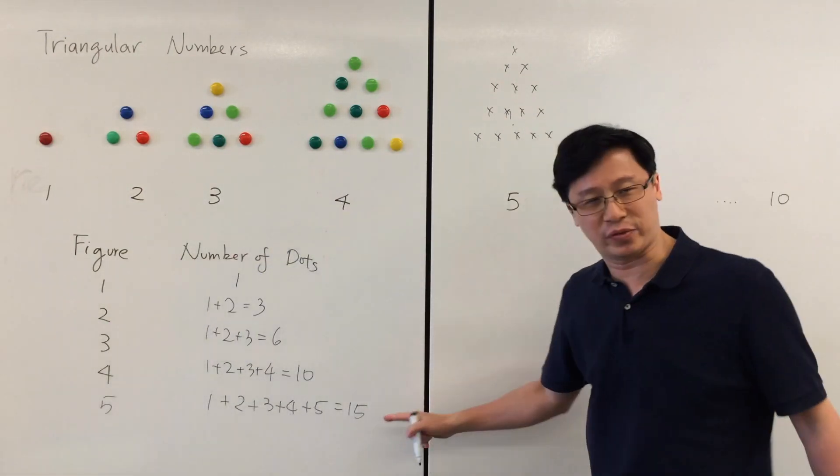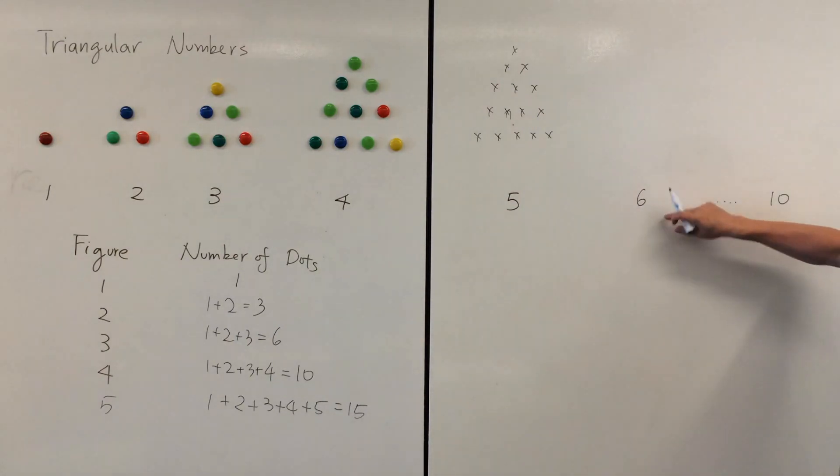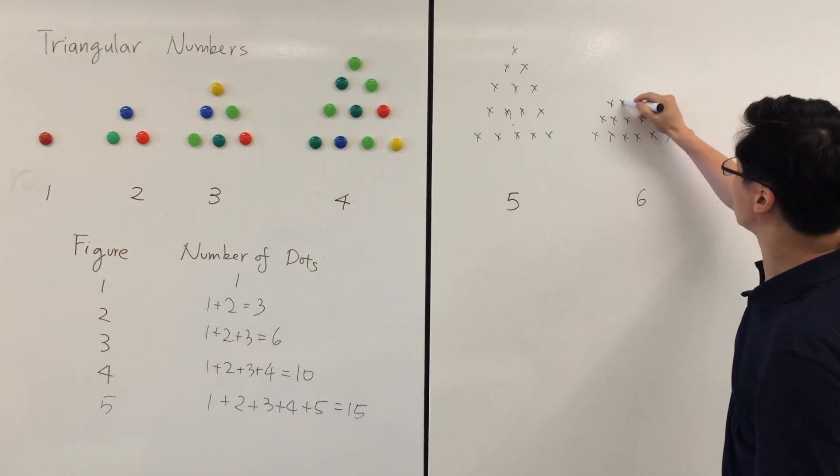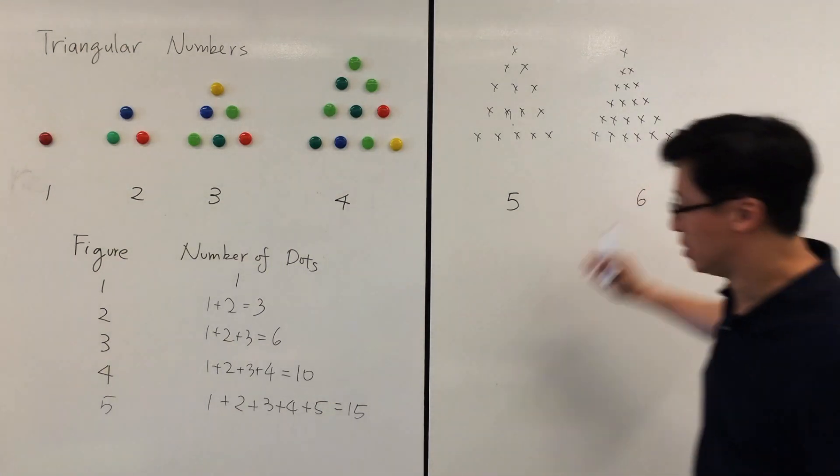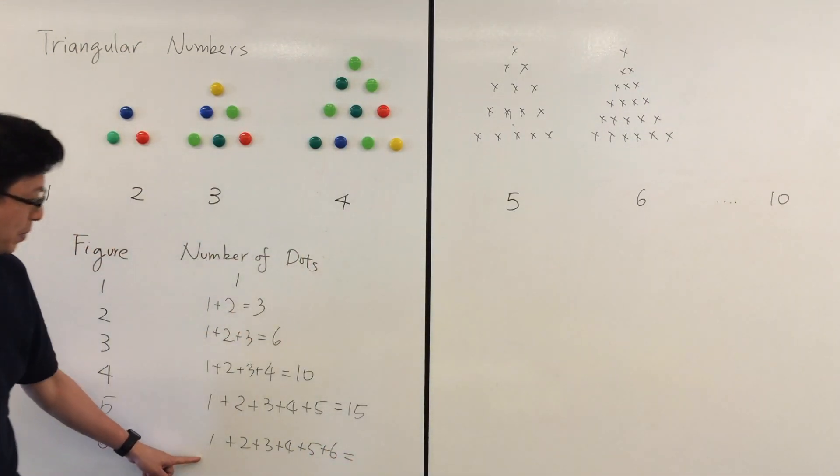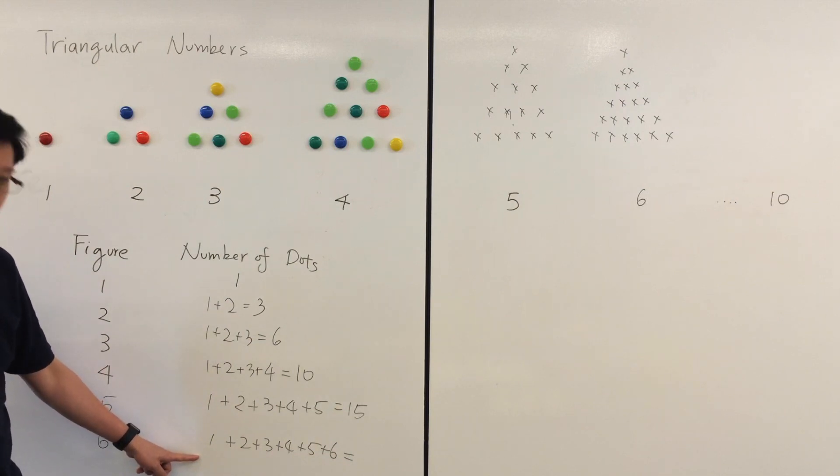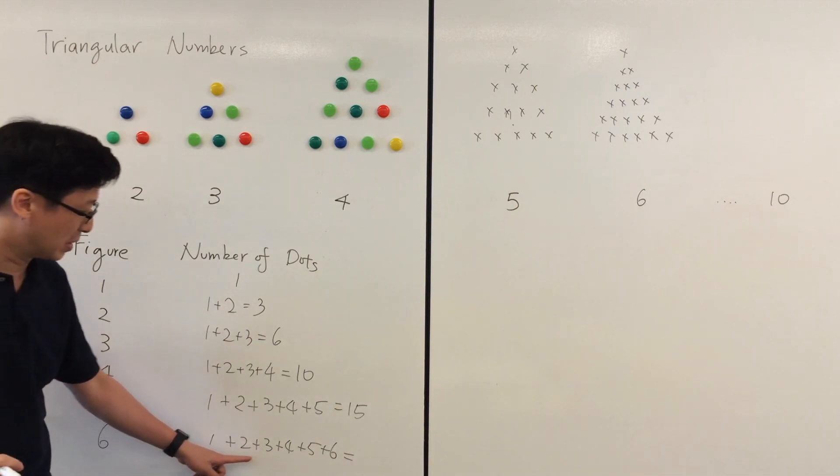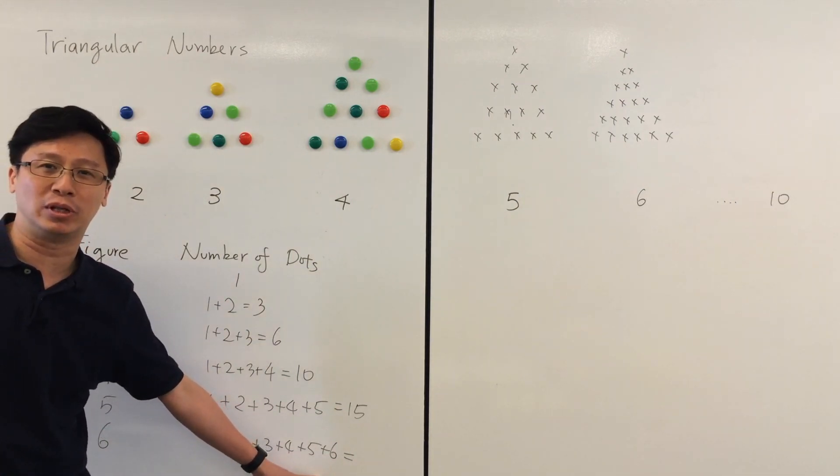That is 15 dots. For the sixth one, can you find the number of dots in this pattern? We repeat the adding process, 1+2+3 until we add up to the number 6.